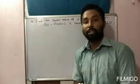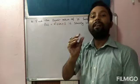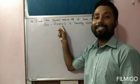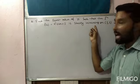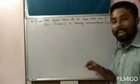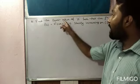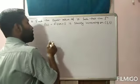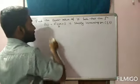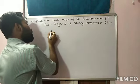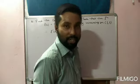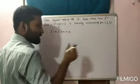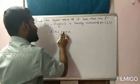Example 4: Find the least value of 'a' such that the function f(x) = x² + ax + 1 is strictly increasing on the open interval (1, 2). Find f'(x) = 2x + a. Since the interval is (1, 2), we have 1 < x < 2. Multiplying by 2: 2 < 2x < 4. Adding 'a' on all sides: 2 + a < 2x + a < 4 + a, that is 2 + a < f'(x) < 4 + a.